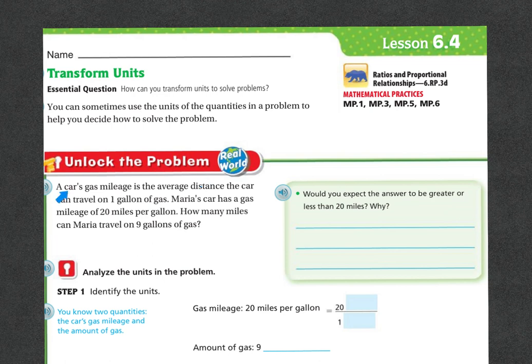Let's unlock the problem. A car's gas mileage is the average distance the car can travel on one gallon of gas. Maria's car has a gas mileage of 20 miles per gallon. How many miles can Maria travel on nine gallons of gas?